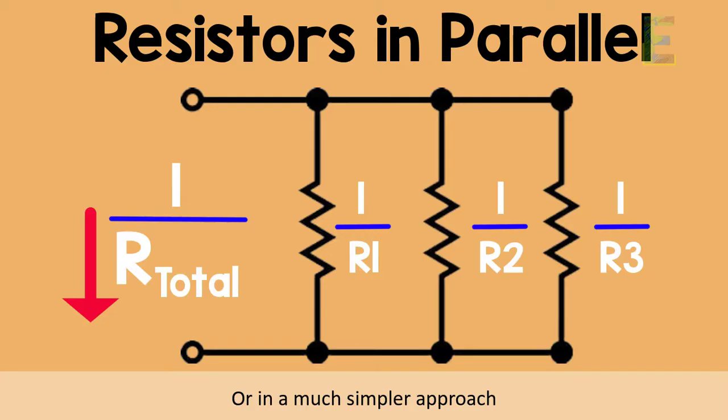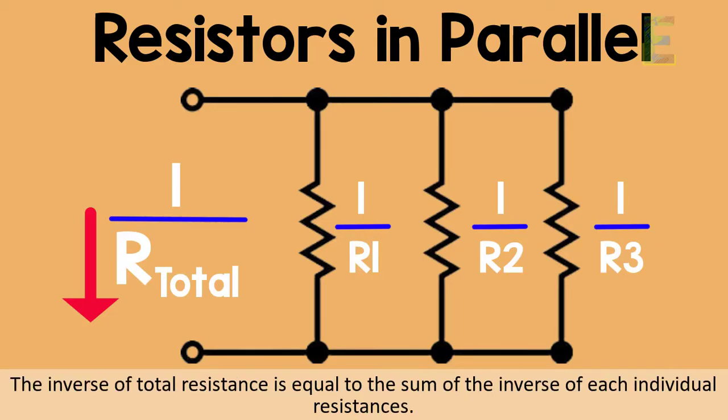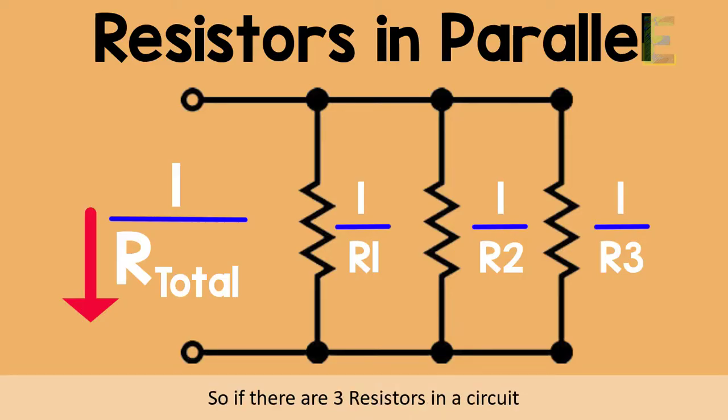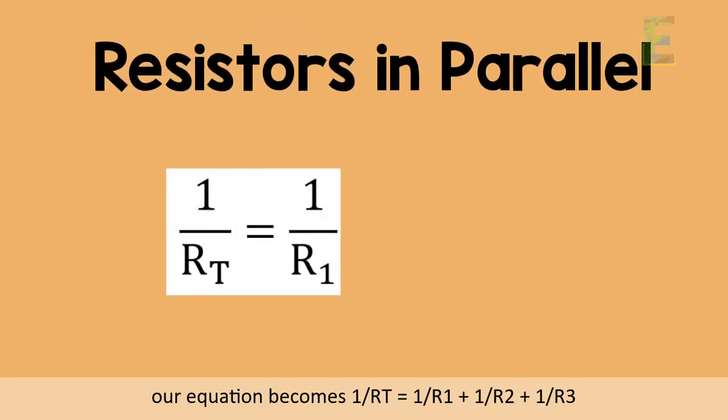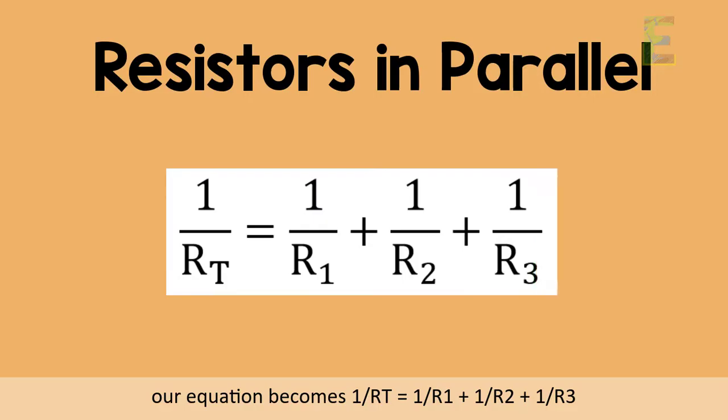Or in a much simpler approach, the inverse of total resistance is equal to the sum of the inverse of each individual resistances. So, if there are 3 resistors in a circuit, our equation becomes 1 over total resistance is equal to 1 over R1 plus 1 over R2 plus 1 over R3.